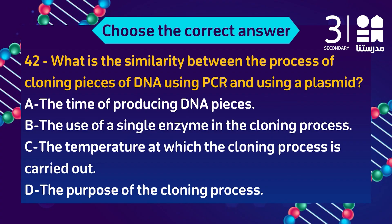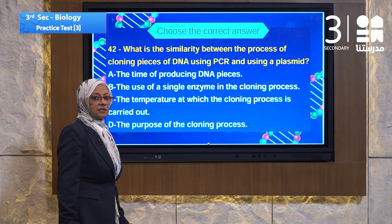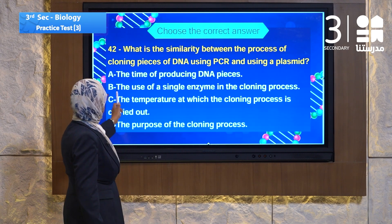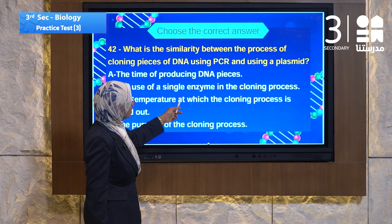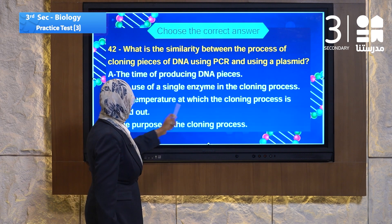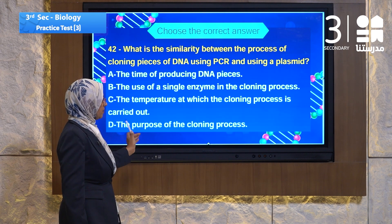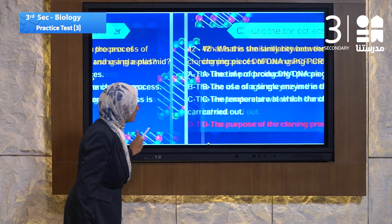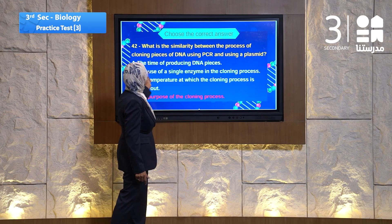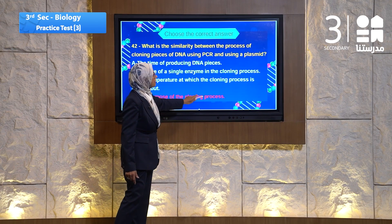Question 42: What is the similarity between the process of copying pieces of DNA using PCR and using a plasmid? The choices discuss: the time of producing DNA pieces, the use of a single enzyme, the temperature at which the cloning process is carried out, and the purpose of the cloning process. The answer must be the purpose of the cloning process, because that is what PCR and plasmid cloning share in common.